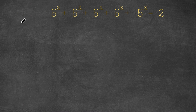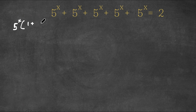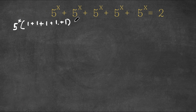I'm first going to factor out 5 to the power of x. So we get 5 to the power of x times — 5 to the power of x divided by 5 to the power of x is 1 — plus 1, plus 1, plus 1, plus 1. And this is equal to 2. If we simplify what's in the parentheses, we get 5.